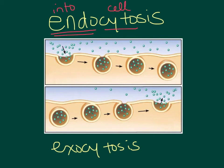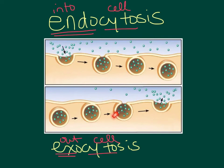You can imagine exocytosis is the opposite. 'Exo,' like an exit, means out of the cell, and 'cyto' means cell. In this case, a vesicle that contains materials that the cell wants to get rid of fuses with the plasma membrane and then releases its contents into the extracellular environment.